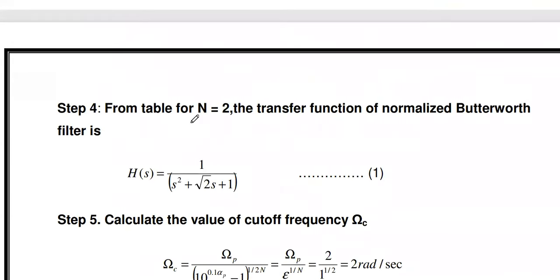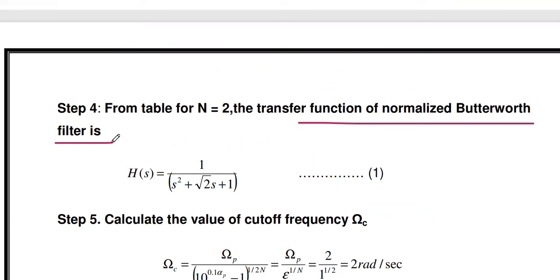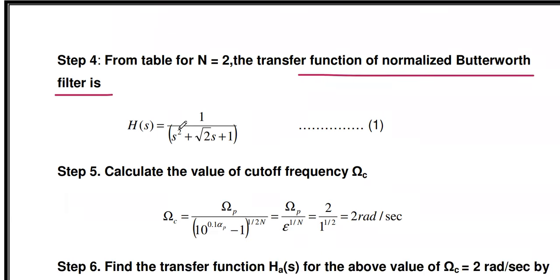From the normalized Butterworth filter denominator polynomial table, for n = 2 the transfer function is H(s) = 1/(s² + √2·s + 1). This is the standard normalized second-order Butterworth filter transfer function.